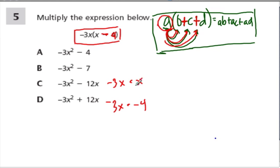Another way to think about it, and this is, I think, the more friendly way, you can think of it as negative 3x times x, and then we subtract negative 3x times 4.